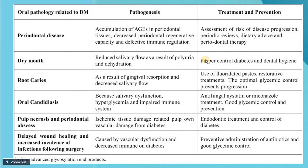Regarding the main pathogenesis of problems in diabetes mellitus intraorally, including periodontal disease: there will be accumulation of AGE — advanced glycosylation end products — which affects collagen fiber healing and breakdown. Accumulation of these end products in periodontal tissue decreases periodontal regeneration capacity and results in defective immune regulation, leading to periodontal disease. Treatment includes risk assessment, periodic reviews, dietary advice, and periodontal therapy.